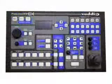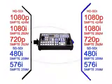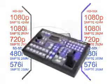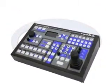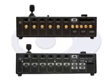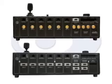ProductionView HD can accept a variety of analog HD, SD, and analog RGB signals, and ProductionView HD-SDI can accept a variety of SD-SDI and HD-SDI signals. The end result is an intuitive, easy-to-use system that requires minimal training to operate. ProductionView HD simplifies the system requirements of designing, installing, and operating a video production console.